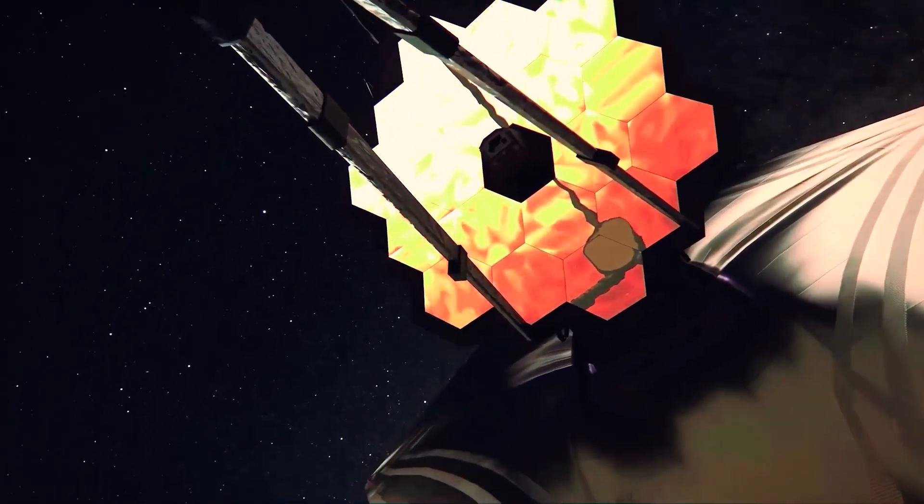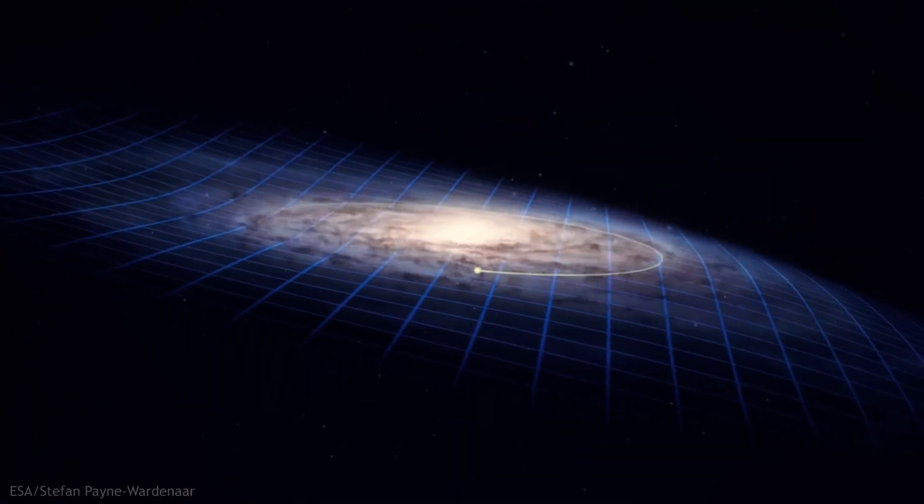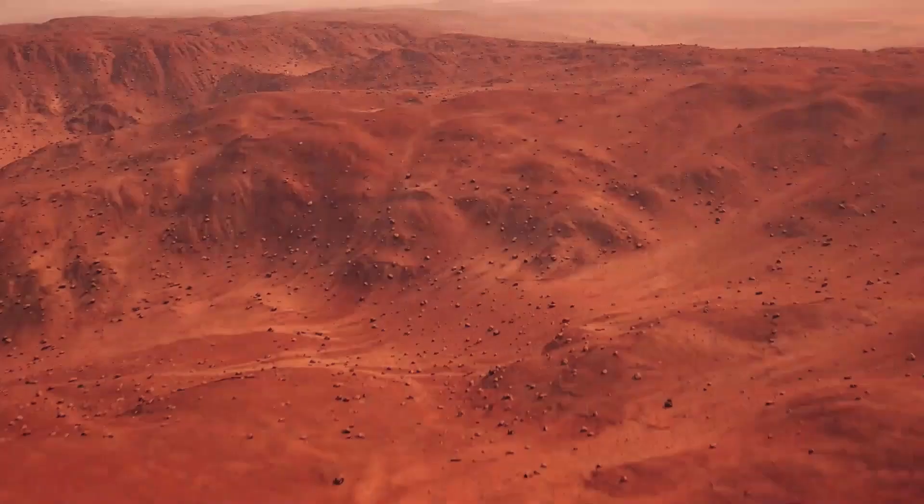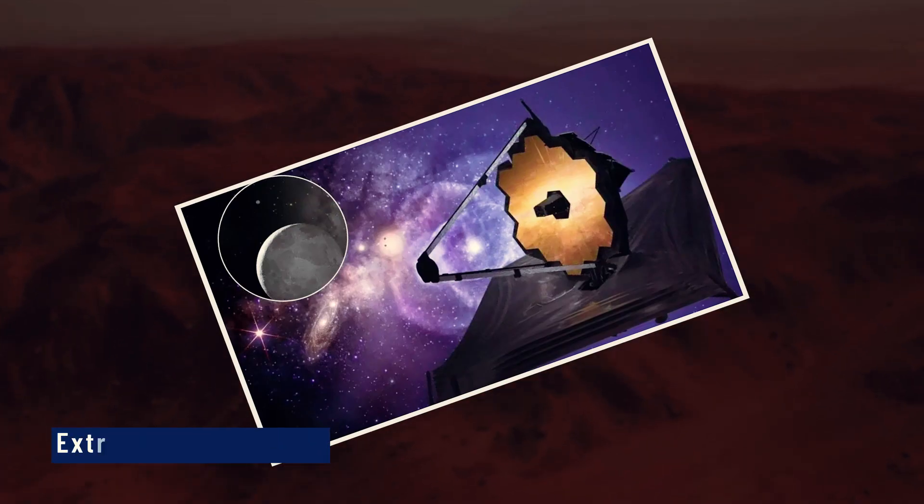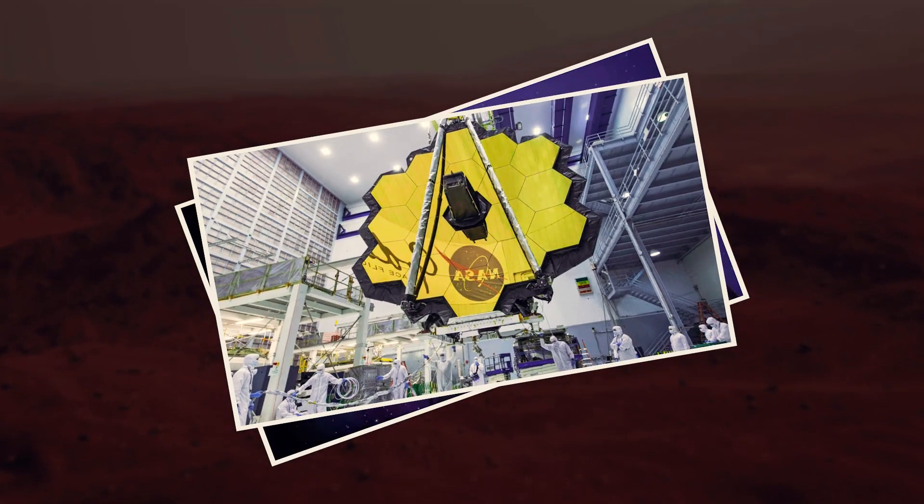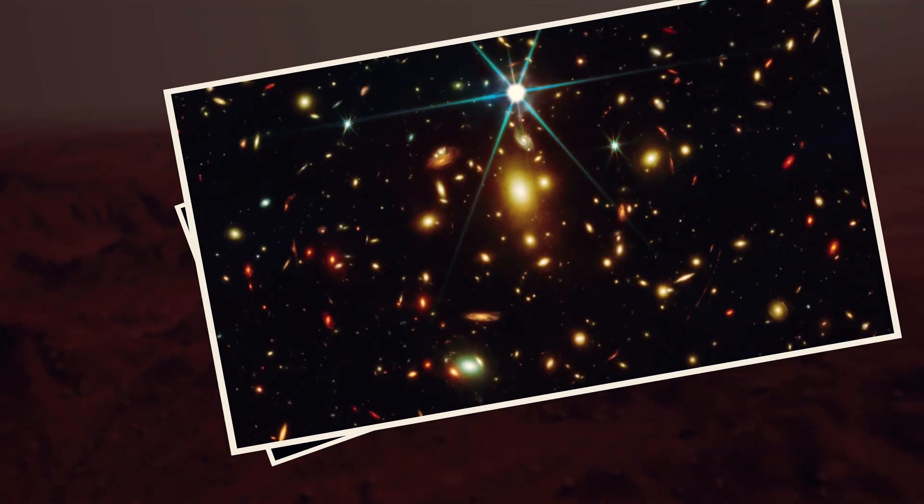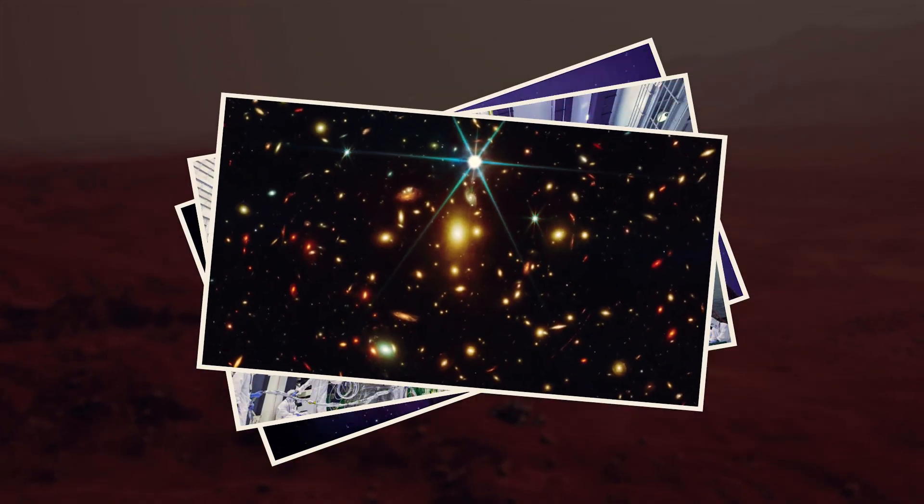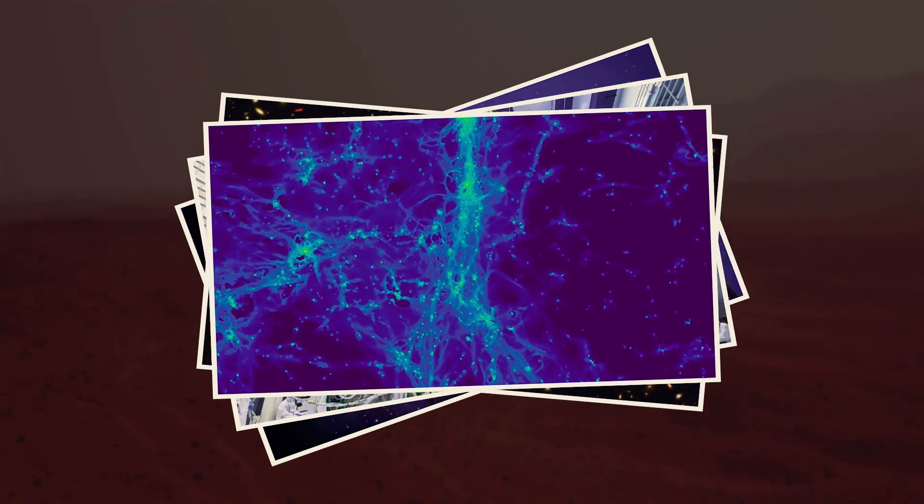Enter the James Webb Space Telescope. Webb was designed with exactly this problem in mind. By operating in the infrared, it sees through the murk, capturing the heat signatures that dust and gas clouds can't fully obscure. NASA's recent survey of the extreme outer galaxy used Webb's deep sensitivity to map regions once lost to darkness, revealing not only new stars, but sometimes the unexpected.